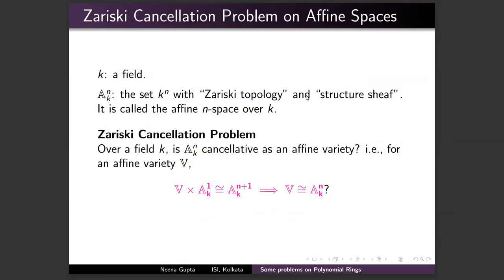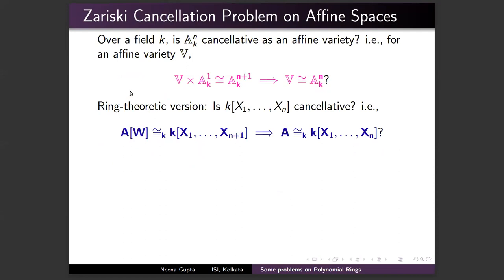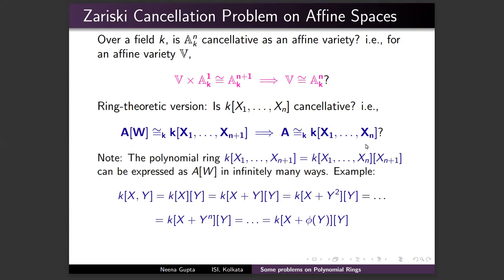The cancellation problem asks: is the affine n-space 𝔸ⁿₖ cancellative as an affine variety? That is, if an affine variety V satisfies V × 𝔸¹ₖ ≅ 𝔸ⁿ⁺¹ₖ, does it follow that V ≅ 𝔸ⁿₖ? Equivalently in commutative algebra: if A is a ring such that A[t] ≅ k[x₁, …, xₙ₊₁], does that imply A ≅ k[x₁, …, xₙ]?